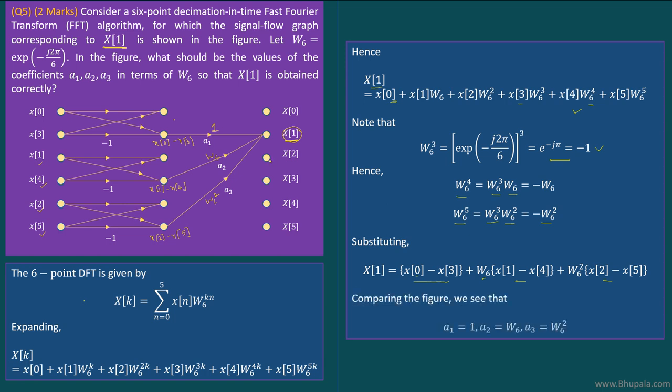What do we see? We see that a1 should be equal to 1, and a2 should be equal to W6, and a3 should be equal to W6^2. So in this way we can solve this problem, and hopefully you have understood this problem. Thank you.